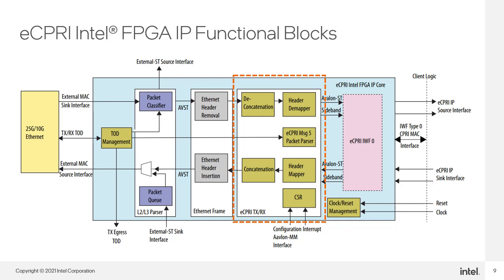Highlighted now is the core of the eCPRI transmit and receive logic. In the transmit path, moving from the FPGA fabric to the left, you can see the header mapper and concatenation blocks. The header mapper appends the eCPRI common header to the outgoing message received from the fabric. The concatenation block can then concatenate multiple eCPRI messages into a single Ethernet frame or IP UDP packet. In the receive path, moving from the IP core into the FPGA on the right, you can see the header deconcatenation and header demapper blocks. The header deconcatenation block returns concatenated messages back to their original eCPRI message, and the header demapper block removes the eCPRI header from the incoming message and forwards it into the FPGA logic.